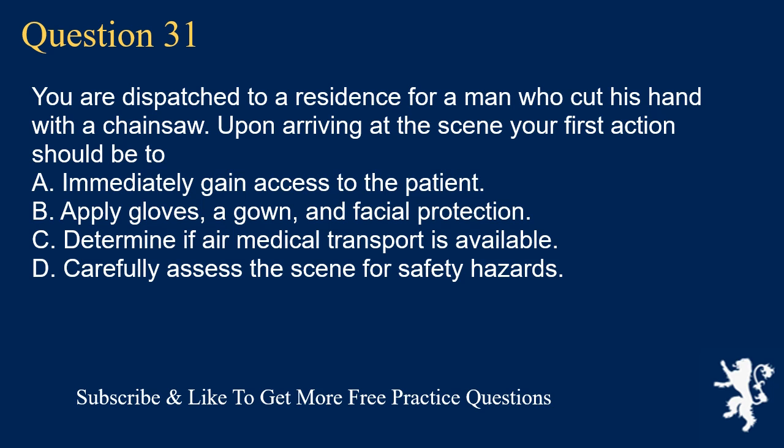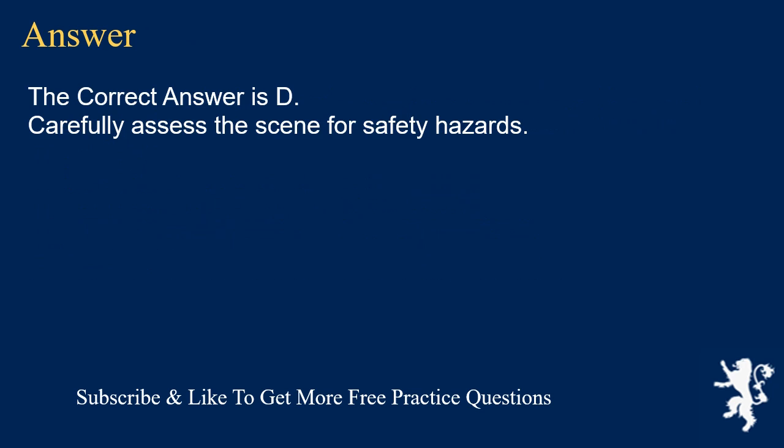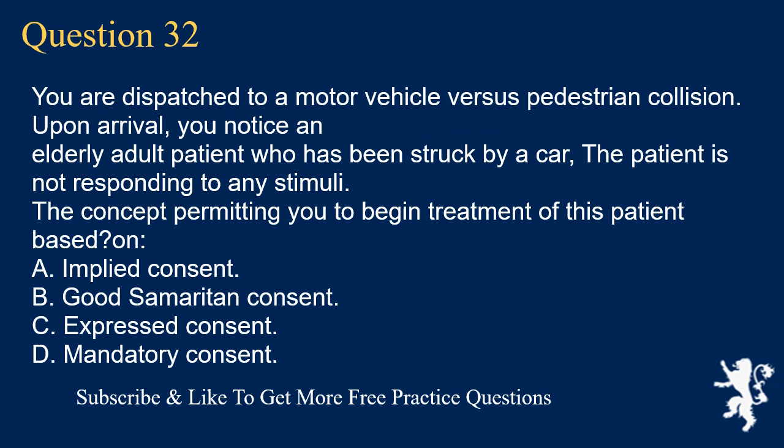Question 31. You are dispatched to a residence for a man who cut his hand with a chainsaw. Upon arriving at the scene, your first action should be to: A. Immediately gain access to the patient. B. Apply gloves, a gown, and facial protection. C. Determine if air medical transport is available. D. Carefully assess the scene for safety hazards. The correct answer is D. Carefully assess the scene for safety hazards.